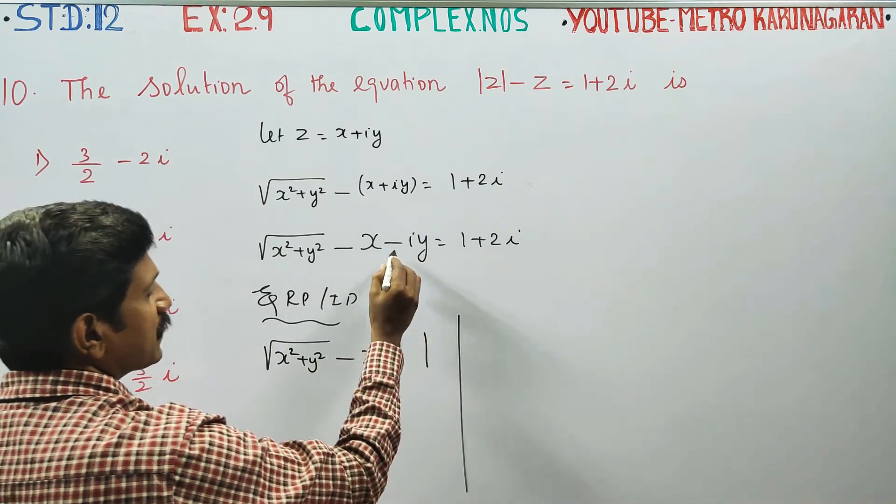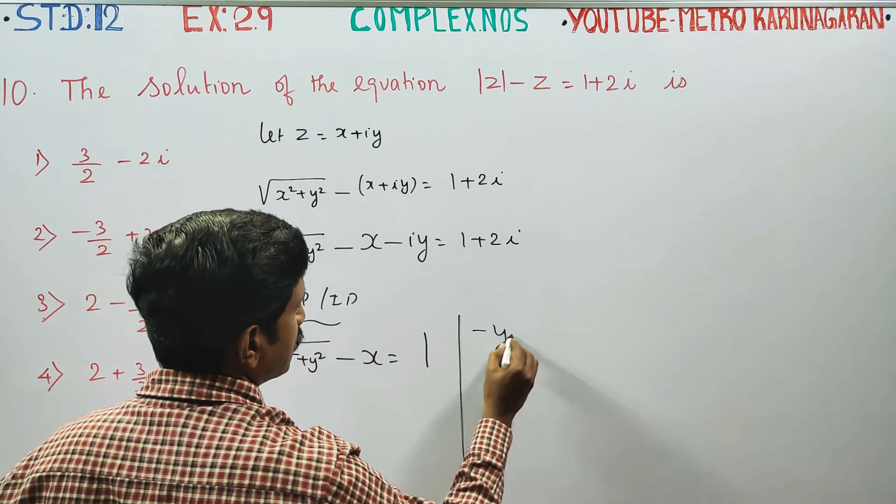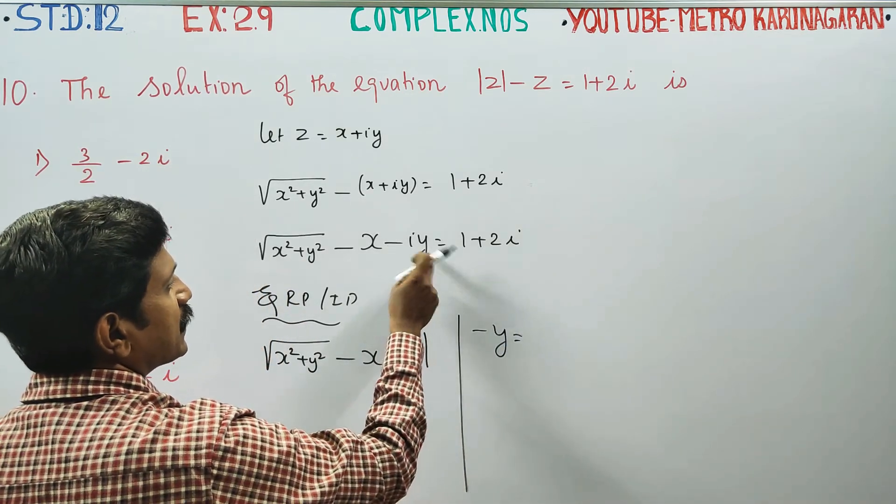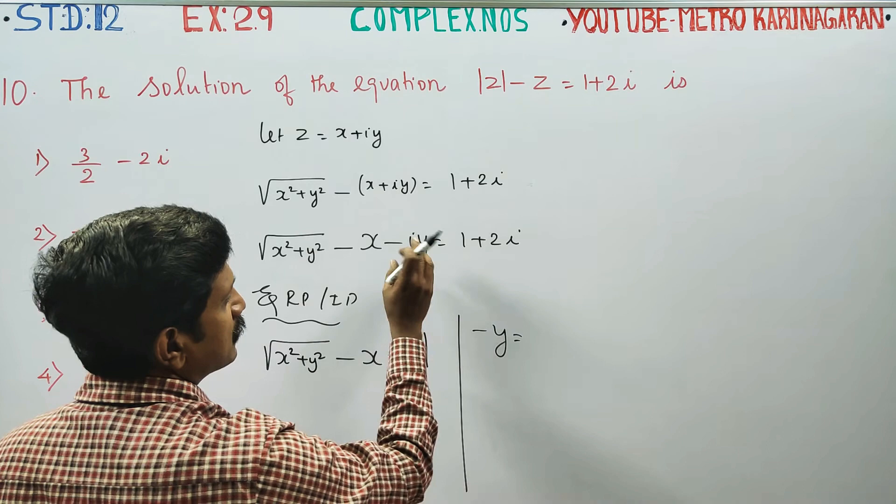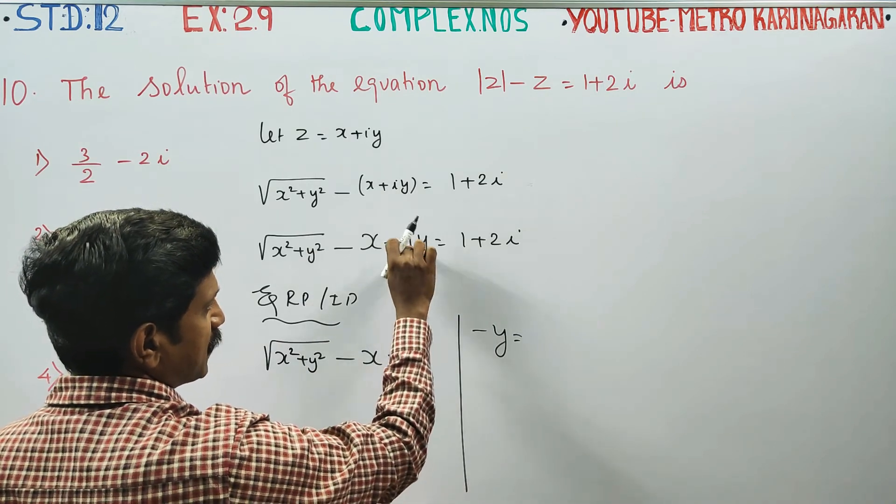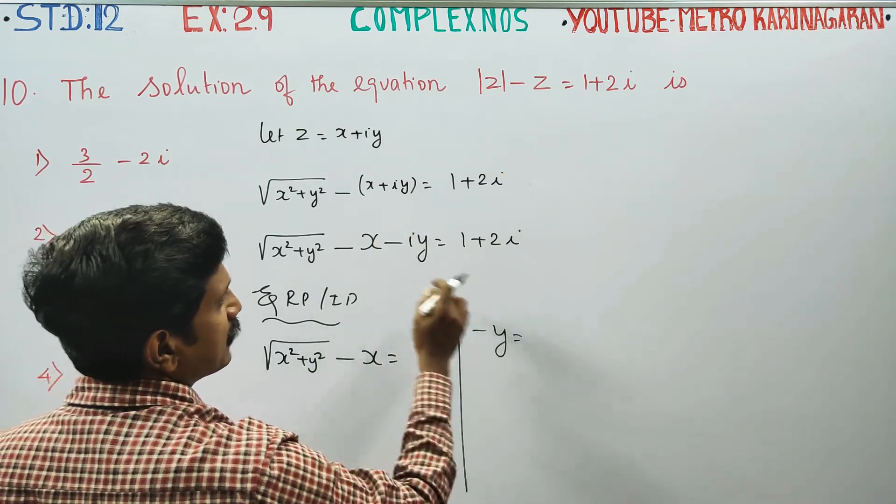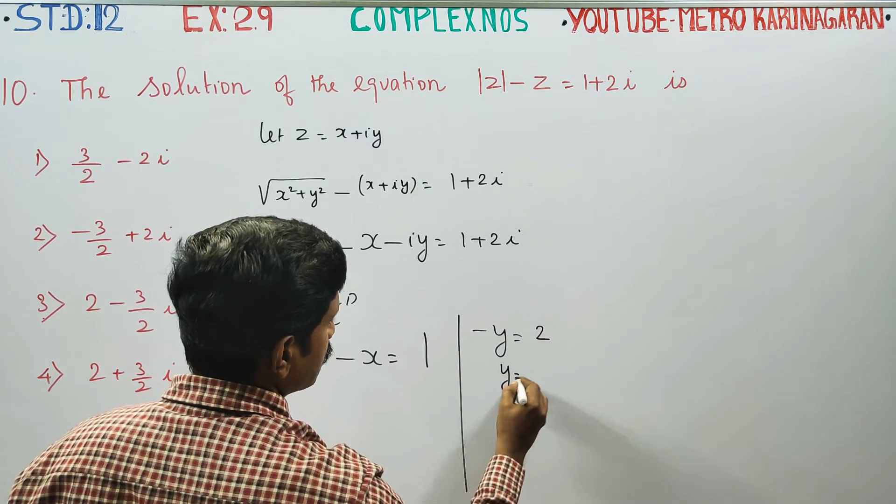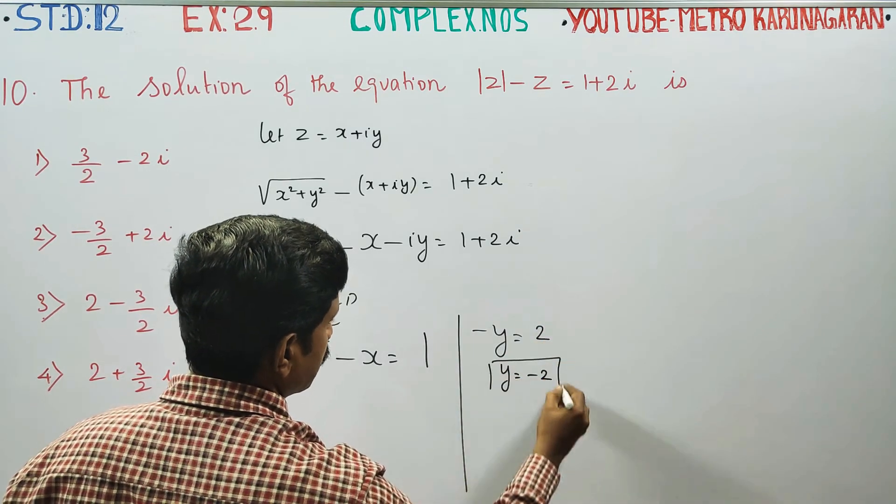Imaginary part is minus y. The imaginary part here is minus y, which equals 2. So y is equal to minus 2 will be my answer.